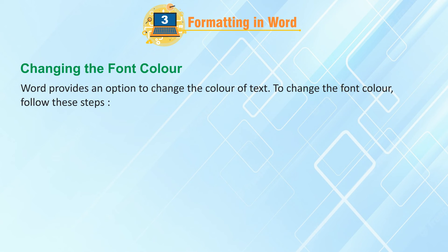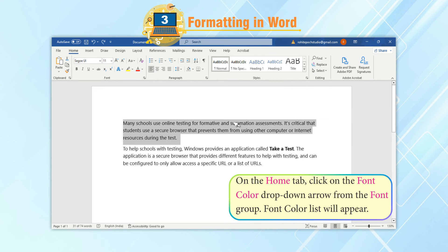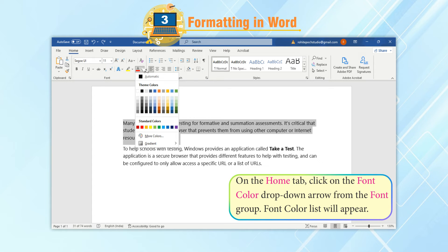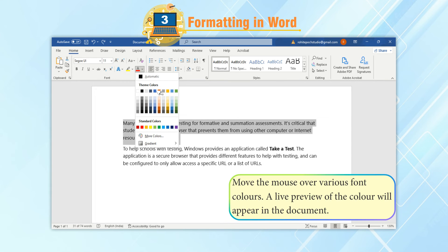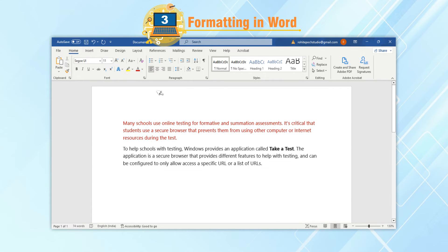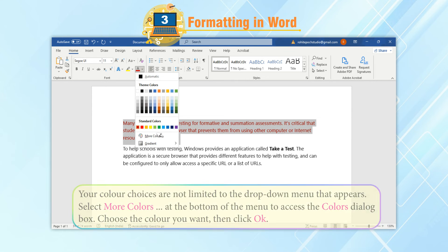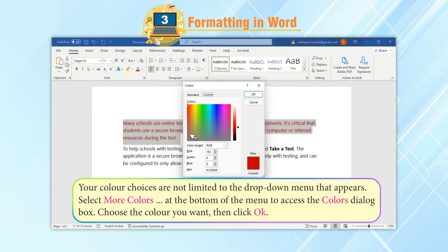Changing the Font Color. Word provides an option to change the color of text. To change the font color, follow these steps: Select the text you want to modify. On the Home tab, click on the Font Color drop-down arrow from the Font group. A font color list will appear. Move the mouse over various font colors. A live preview of the color will appear in the document. Select the font color you want to apply. The font color will be changed in the document. Your color choices are not limited to the drop-down menu. Select More Colors at the bottom of the menu to access the Colors dialog box. Choose the color you want, then click OK.